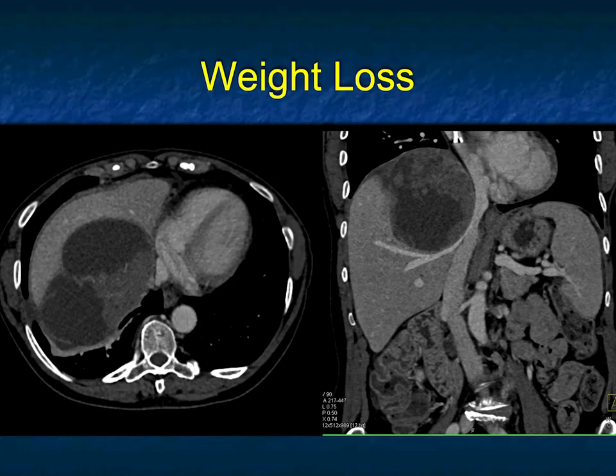This patient has weight loss. You see a complex cystic and solid mass in the liver. Thoughts: primary tumor, biliary cystadenoma, biliary cystadenocarcinoma. Metastasis — germ cell tumor, GIST tumor, ovarian cancer, melanoma.